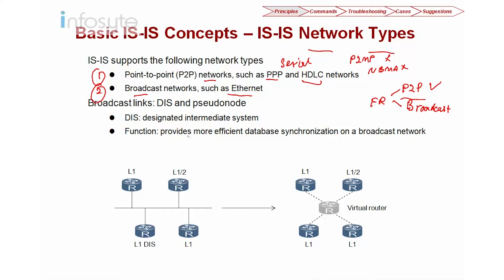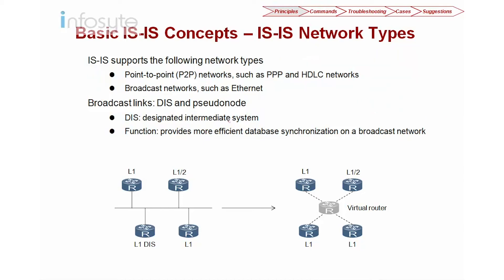In ISIS, routers send hello packets. The hello generated by point-to-point and broadcast networks will be different. On a broadcast link, just like OSPF has a DR, ISIS has a Designated Intermediate System or DIS. The purpose of the DIS, like the DR, is to reduce the number of adjacencies. In a LAN environment running on Ethernet, all interfaces are connected through a switch, and when they form adjacency, one router elects itself as the DIS.